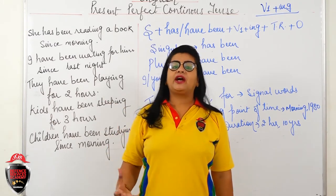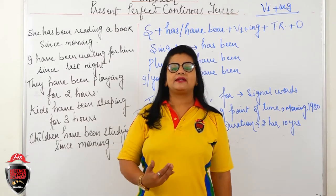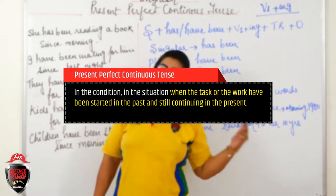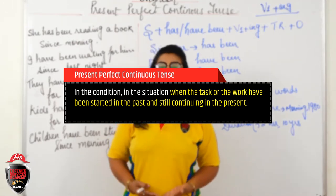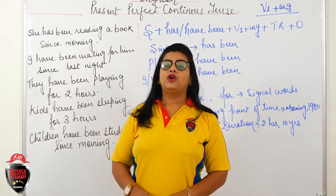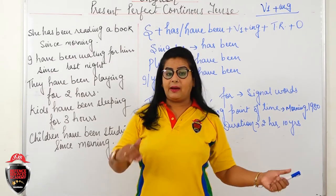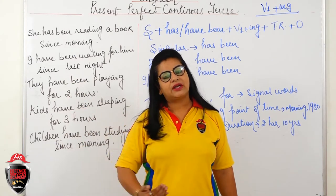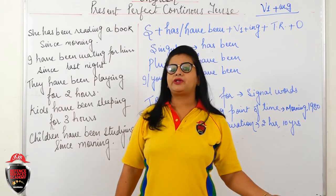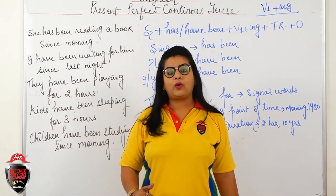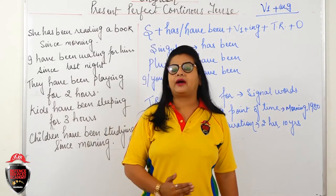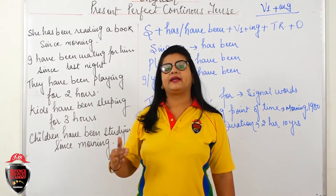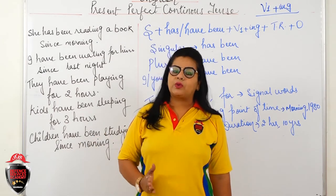In which condition is Present Perfect Continuous Tense used? It is used when the task or work has been started in the past and is still continuing in the present. Any action which was started before but has not yet finished — whether it started in the morning and is still going on, or started two hours ago, or five years ago and is still continuing.